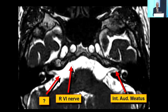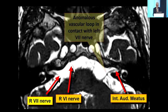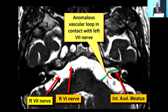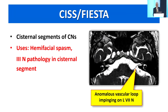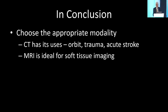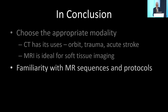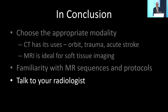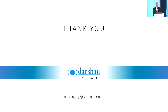My last sequence is an extremely bright T2-like picture called a CISS or FIESTA image, where you can see cranial nerves in the subarachnoid space — the right 7th nerve, the left 7th nerve, and next to it an anomalous blood vessel loop. This patient had left hemifacial spasm. These SSFP sequences go by different names on different machines but are very useful for looking at cisternal segments of cranial nerves. In conclusion: choose the appropriate modality — CT for orbit, trauma, and acute stroke; MRI for soft tissue. Always talk to your radiologist before sending the patient.